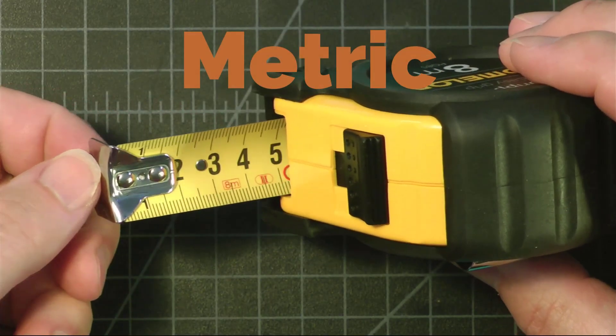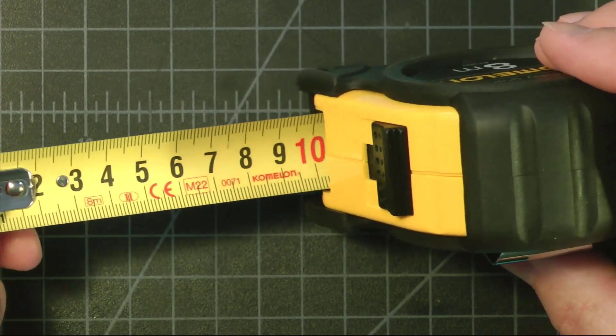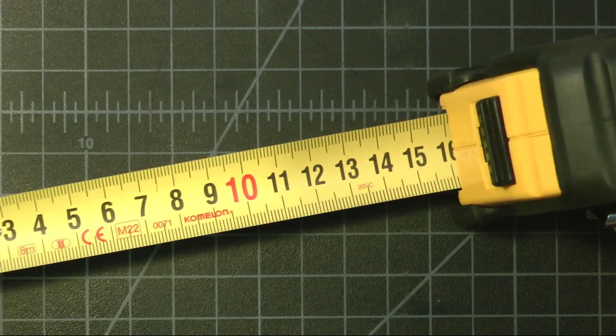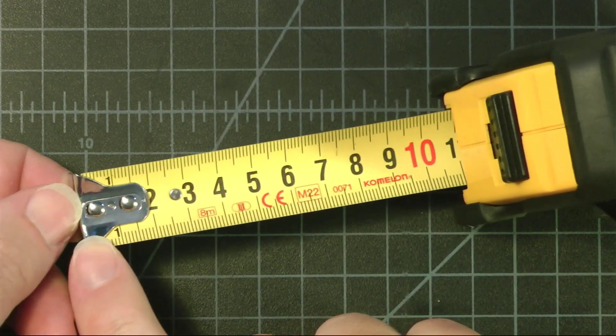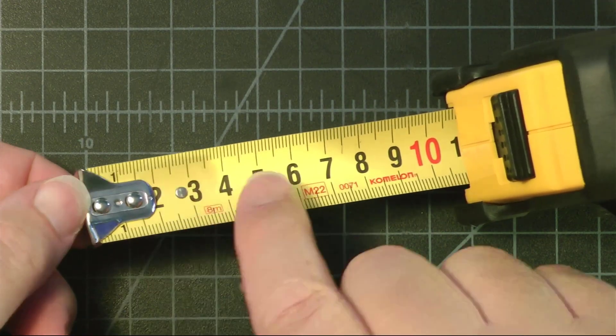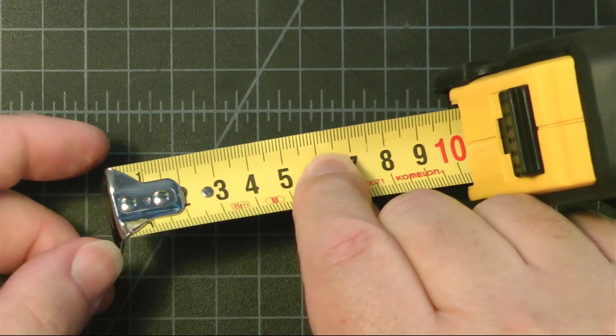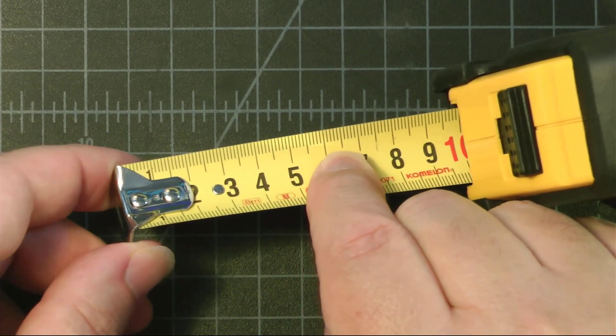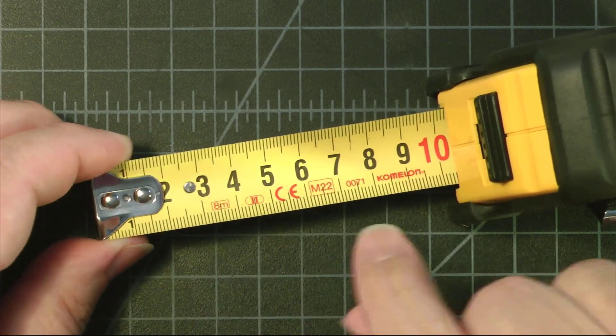Here we have a standard metric tape measure. These numbers here are centimeters. We start at zero here at the hook. The hook here is loose. Have you ever wondered why the hook is loose? Stick around and I'll explain why it needs to be loose.